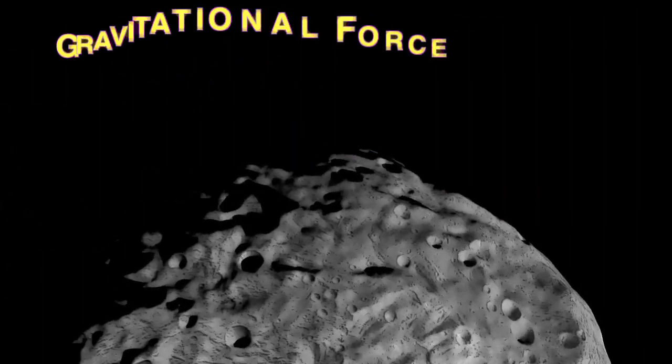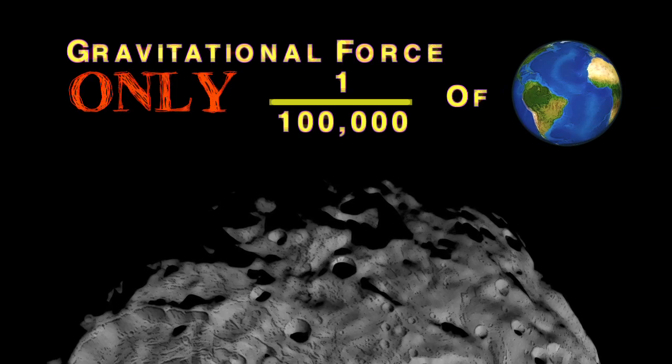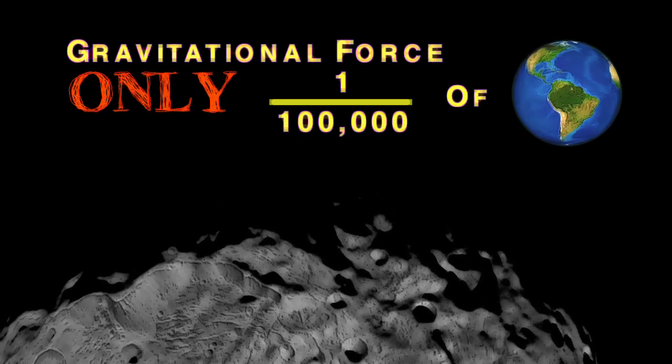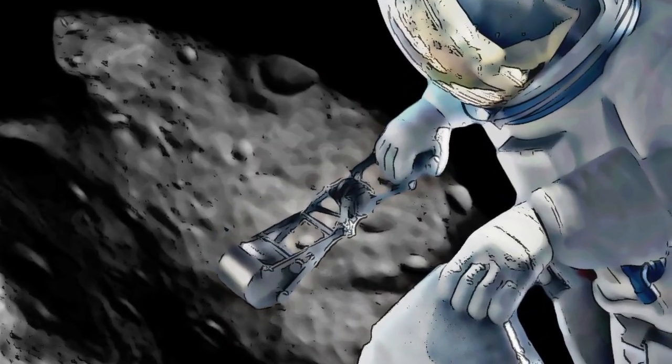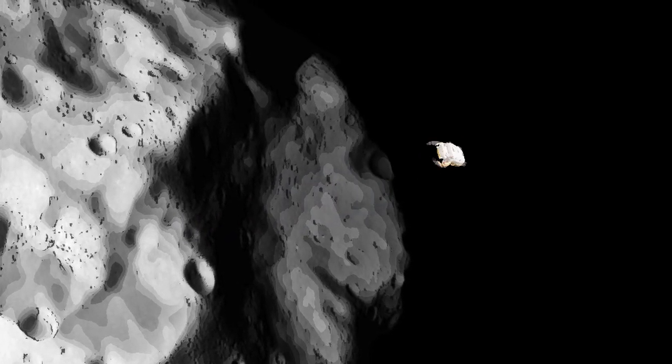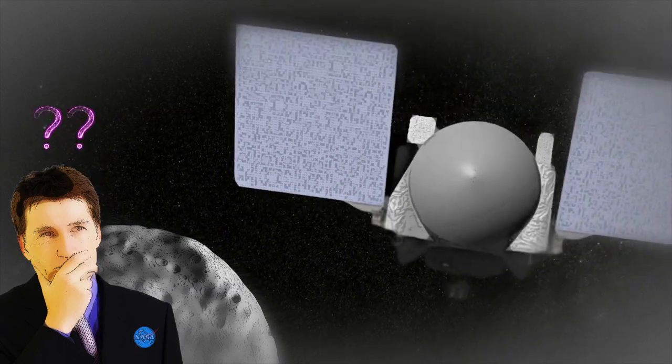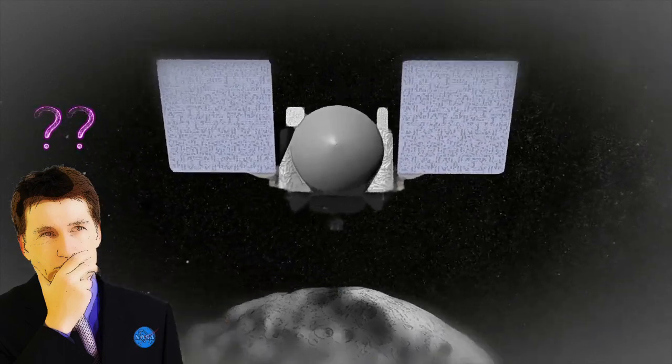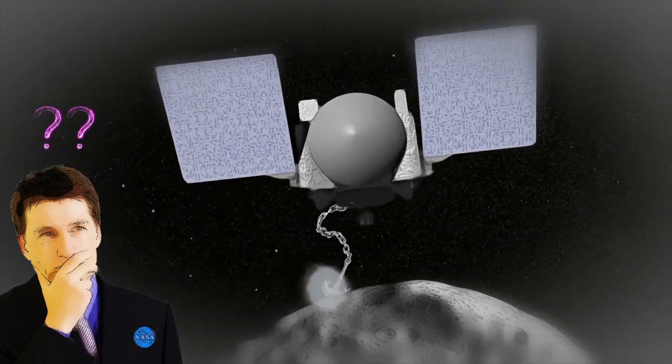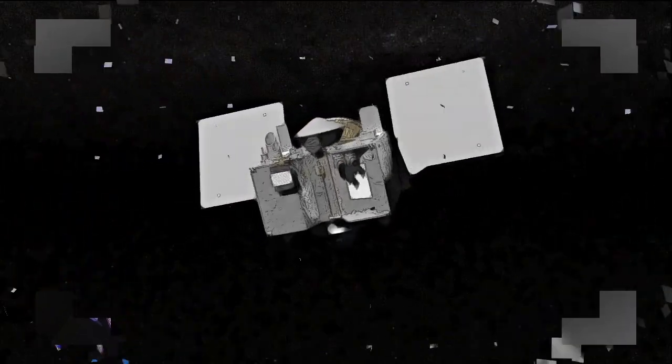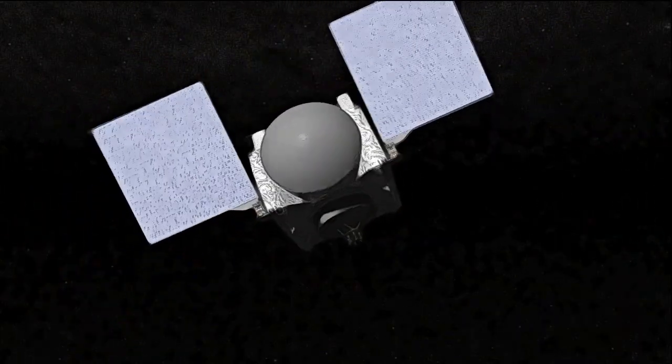Since the gravitational force at the surface of Bennu is only a fraction of what we experience on Earth, an astronaut trying to dig with a shovel there could easily wind up launching himself into space. OSIRIS-REx would have the same challenge. Anchoring the entire spacecraft to Bennu wouldn't be any easier, and would add more technological complexity to OSIRIS-REx's design.